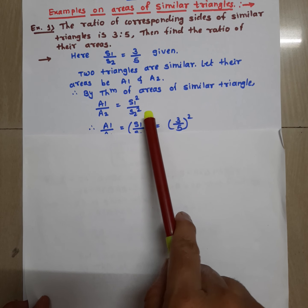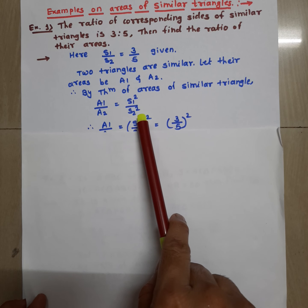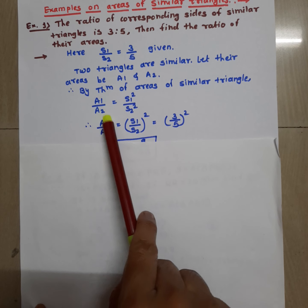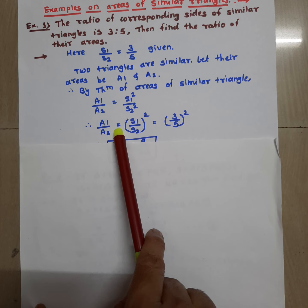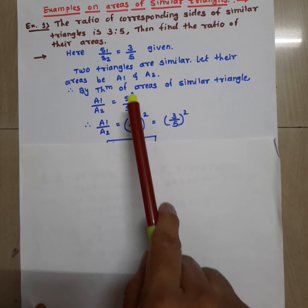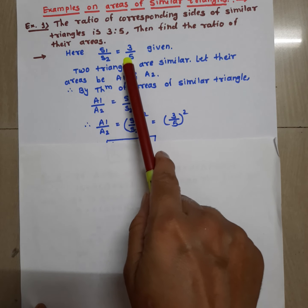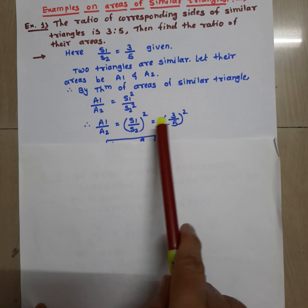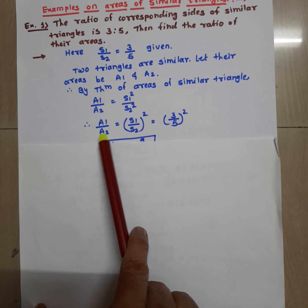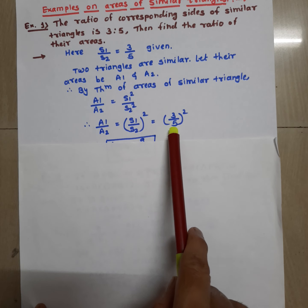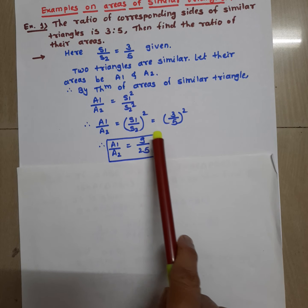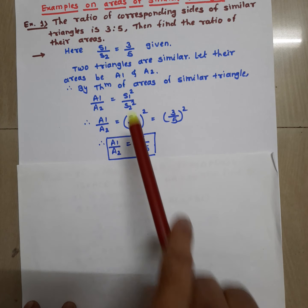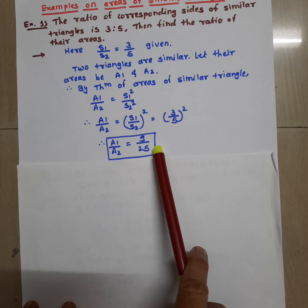We can write S1 square upon S2 square as the bracket squared form: A1 upon A2 is equal to (S1 upon S2) squared. The value of S1 upon S2 is 3 upon 5. Substituting, we get A1 upon A2 is equal to (3 upon 5) squared, which equals 9 upon 25. Therefore the ratio of their areas is 9 is to 25.